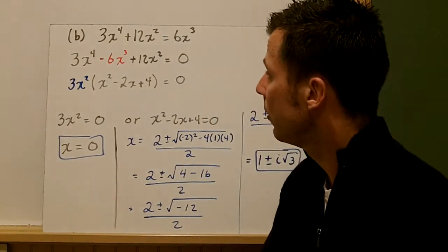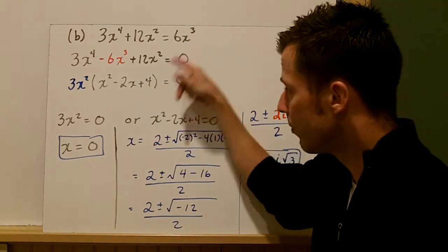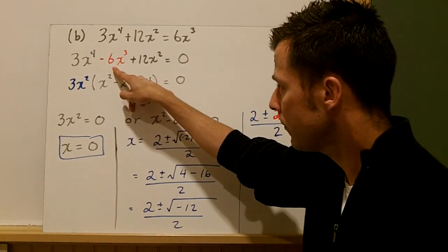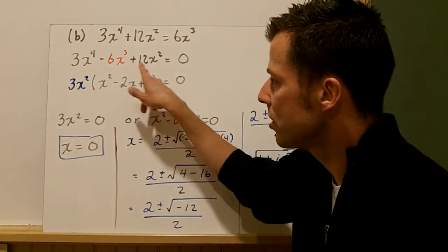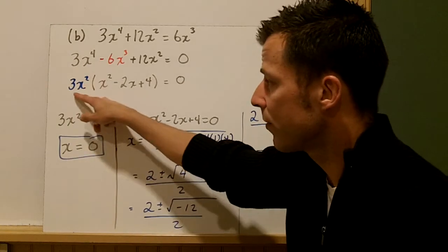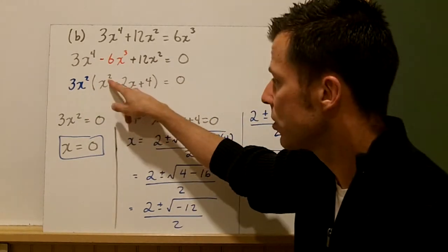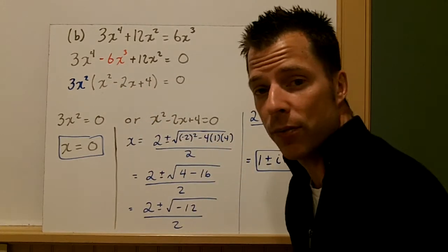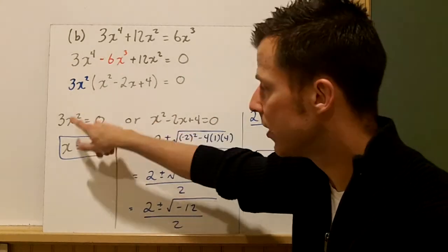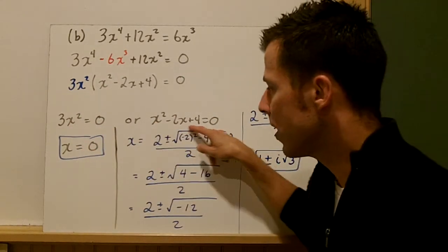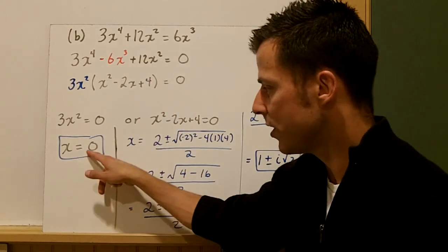In example B we have 3x⁴ + 12x² = 6x³. Again, get everything to one side by subtracting 6x³, giving us 3x⁴ − 6x³ + 12x² = 0. There are three terms and it's a quartic. I notice 3, 6, and 12 all share a factor of 3, and the smallest power of x is x², so I factor out 3x², leaving 3x²(x² − 2x + 4) = 0. Setting 3x² = 0 gives x = 0. Now we look at the quadratic x² − 2x + 4.